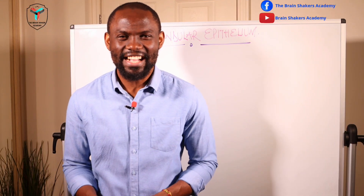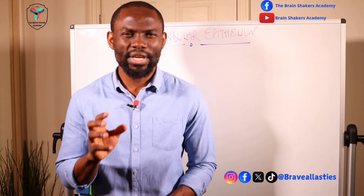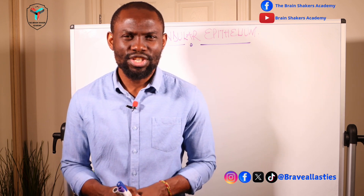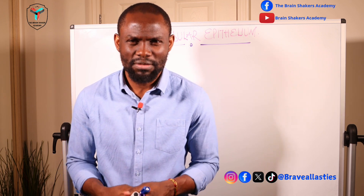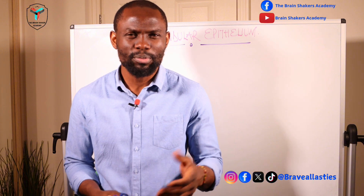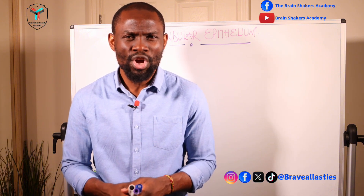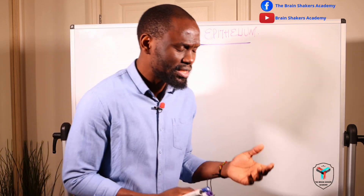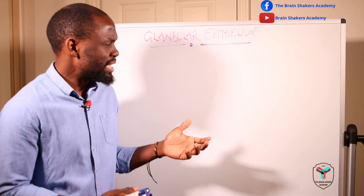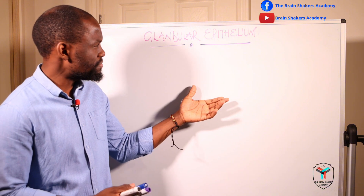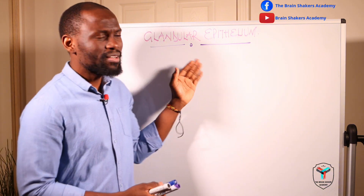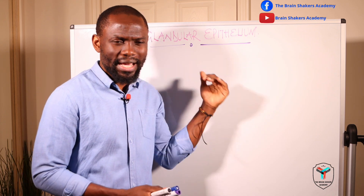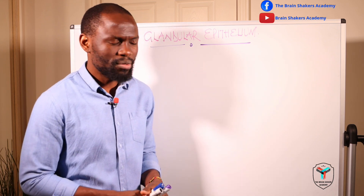Hello Brain Shakers, welcome to the Brain Shakers Academy. In today's session we are looking at the glandular epithelium. We continue looking at the tissues, and we did make mention that we have four principal tissues. We are still looking at the epithelial tissue, of which the glandular epithelium is a part. The first classification would be covering epithelium, and the next one would be glandular epithelia — meaning the epithelial lining of the glands in the body.